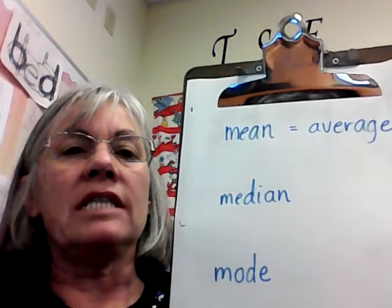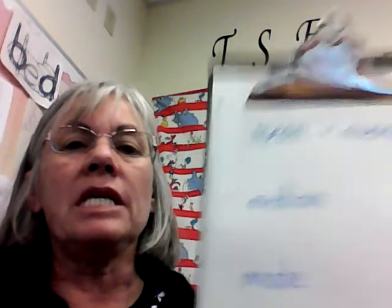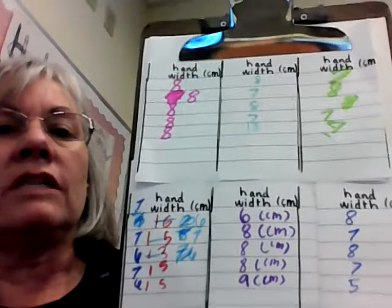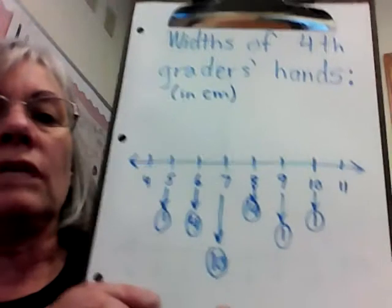You know that mean is the same as average, but I'm going to tell you what the median is — that can give you some different information about your data. We're going to work with some data where students were measuring the width of their hands in the classroom. These are all the measurements in centimeters of different people's hands from class, and we can see that their hands have lots of different values because we're all different sizes.